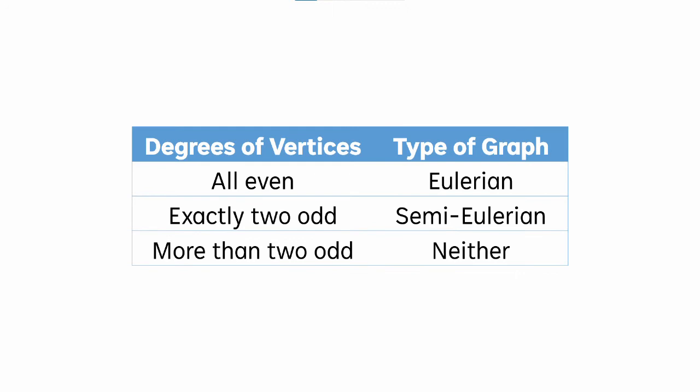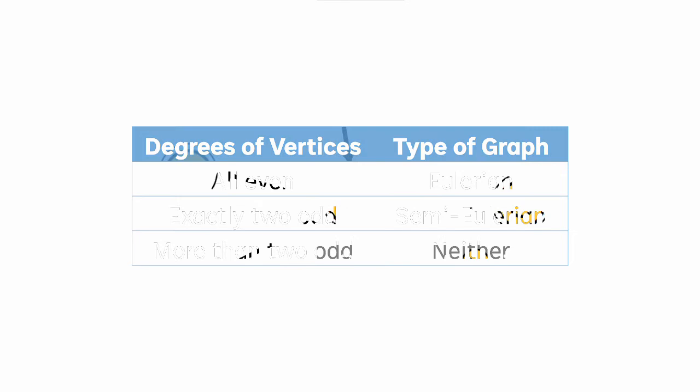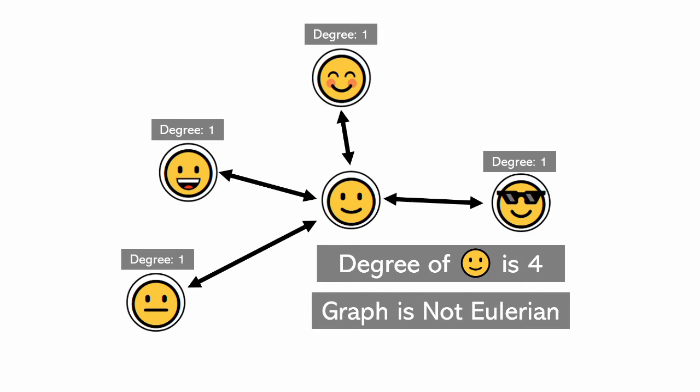If the graph has exactly two vertices of odd degree, the graph is semi-Eulerian. Semi-Eulerian graphs are similar in that you can traverse every edge once, but different in that you cannot start and finish at the same vertex. And if the graph doesn't fit either criteria, then it's just a regular graph. It's not Eulerian at all.